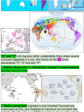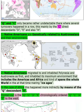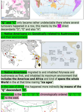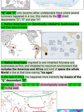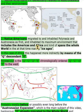Point one: Native Americans are genetically related to Austronesians and their environment. Point two: Native Americans migrated to and inhabited Polynesia and Austronesia first, and inhabited its maximum environment — including the Americas and Africa — spanning the whole world during the roaring ice ages. In the case of Africa, this happened more indirectly by means of the Q-descendant haplogroup E.